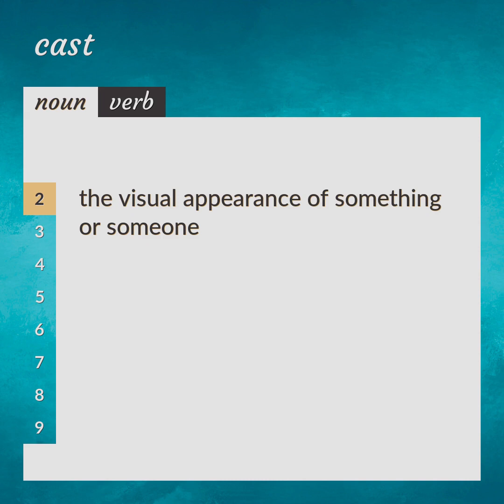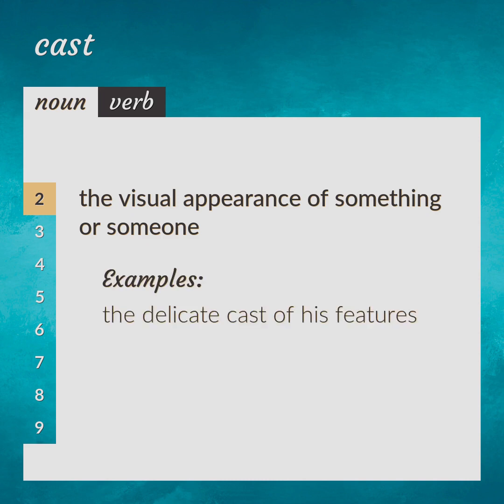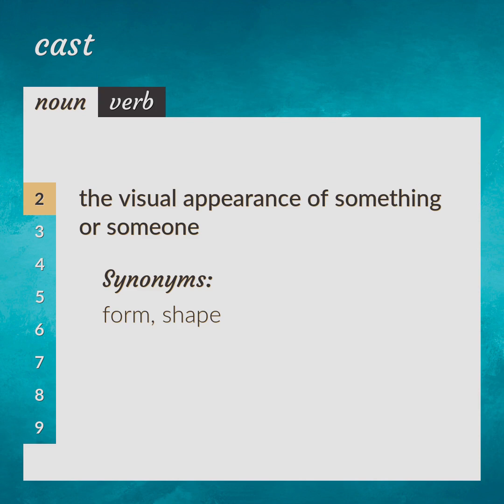The visual appearance of something or someone. Example: the delicate cast of his features. Synonyms: form, shape.